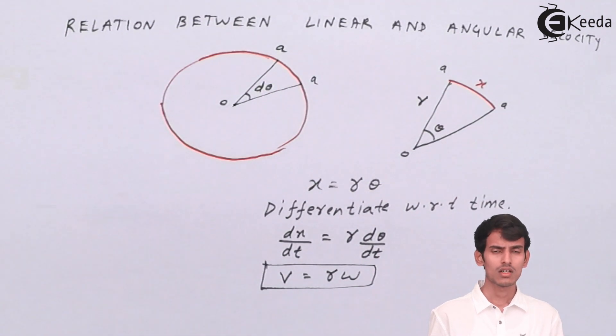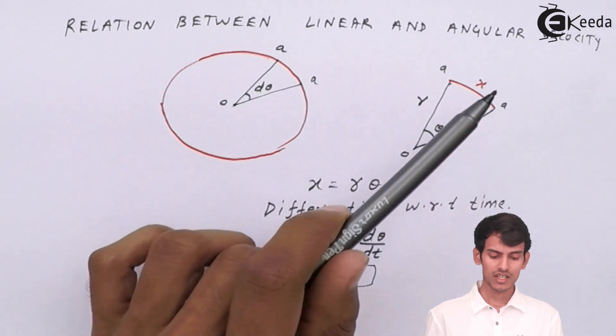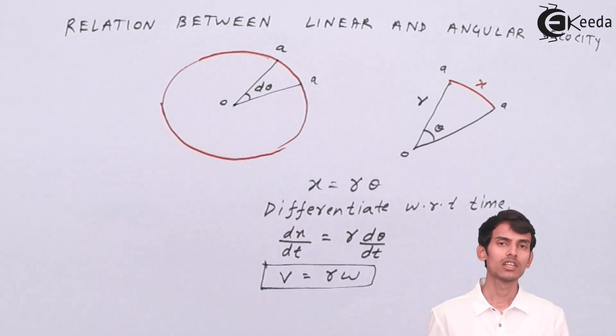The only thing that can bother you in this topic is I have taken x as linear displacement even though it's along a curve. Just because the motion of the rod, the angle that the rod has covered is very small, so the displacement is very less. So the arc almost looks like a line. So this is applicable only when the motion happens for very small angle.